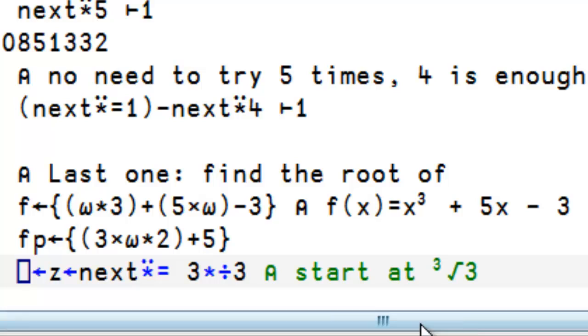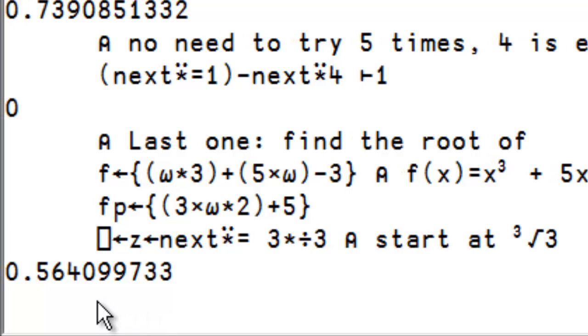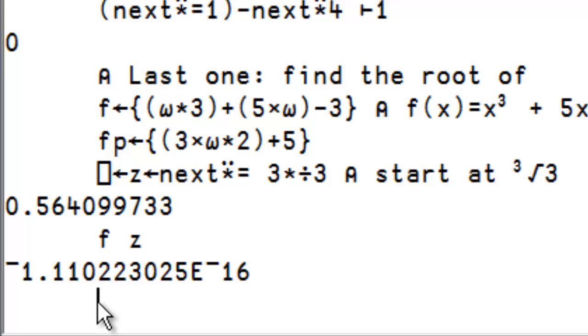its derivative will be 3 times x squared plus 5. So, now if we try start at the cube root of 3, and do it until it is equal, here's the result. This is where the function is equal to 0. And if we apply f to that number, we see that we're very close to 0.